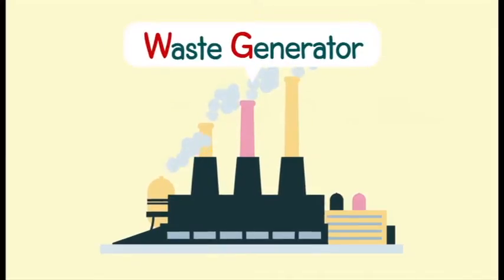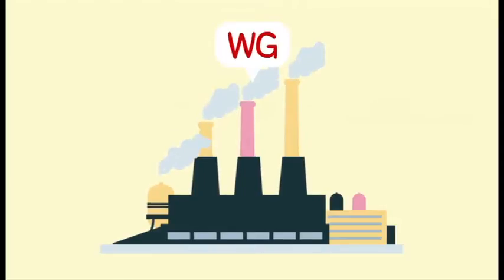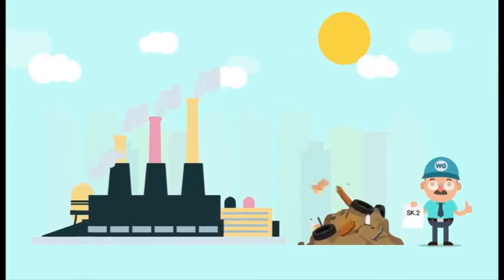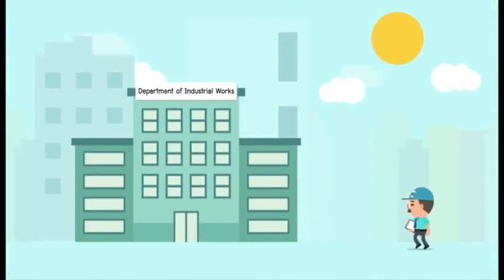The first and crucial spot on the route is a factory that produces industrial waste, we call it WG, which is the factory itself that generates such waste. Each time waste is generated, it is the factory's duty to dispose of this waste according to the law and then report the process of waste disposal by getting permission to treat or dispose of it from the Department of Industrial Works.